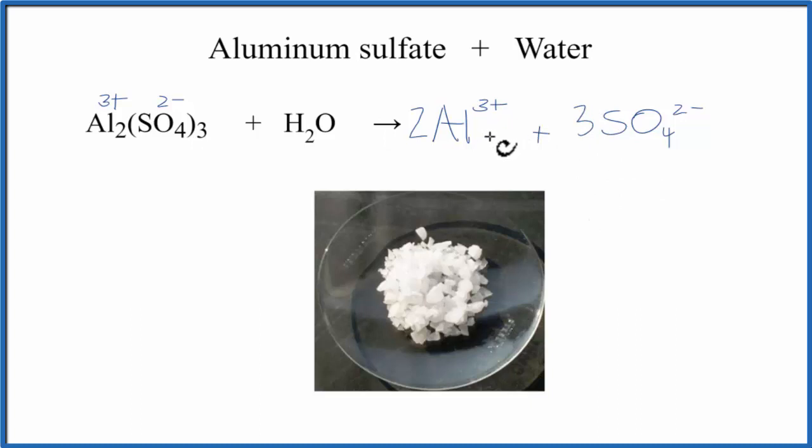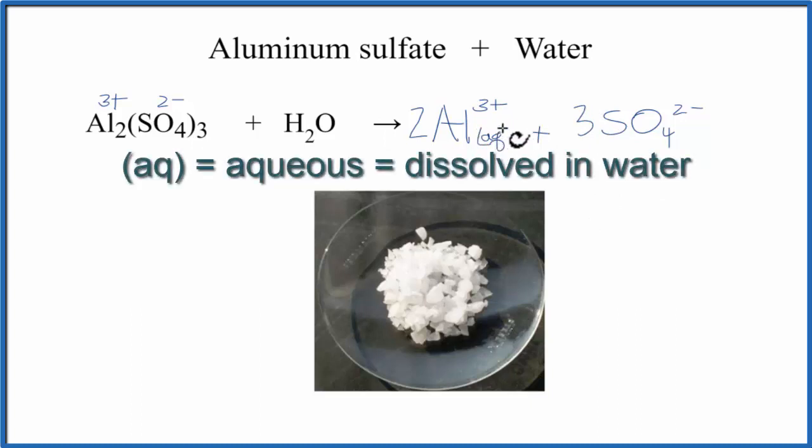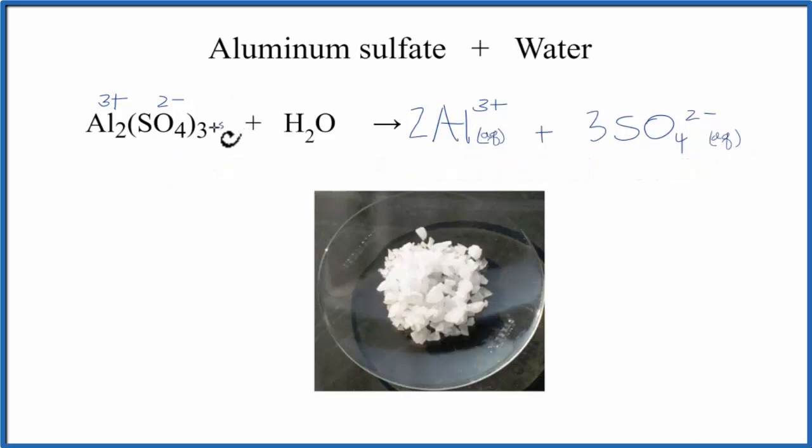And if it was dissolved in water, we'd want to write a little AQ after it to show that it's aqueous, dissolved in water. So we might expect we have our solid aluminum sulfate here, put a little S after that, put it in liquid water, and it could dissociate into its ions.